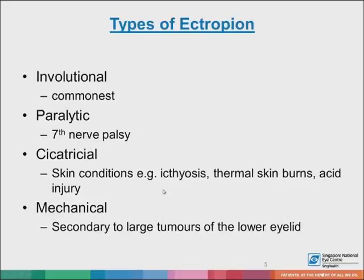The different types of ectropion we can encounter: involutional is probably by far the commonest, followed by paralytic, which is in the setting of seventh nerve palsy — either upper or lower motor neuron. Cicatricial ectropion can occur in skin conditions like ichthyosis, thermal skin burns, or acid injury. Mechanical ectropion is secondary to large tumors of the lower eyelid.